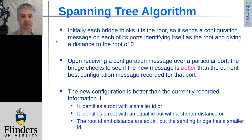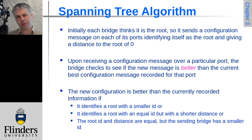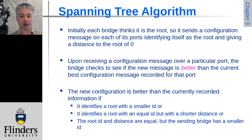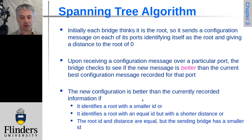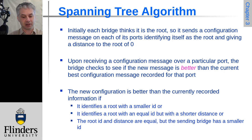In practice, each bridge needs to discover the other bridges, so it sends out a configuration message on each port saying 'I think I'm the root of the tree and my distance to the root is zero.' When it receives a configuration message from any other bridge, it checks whether that bridge should actually be the root instead. If the other bridge has a smaller ID, it stops claiming to be the root. If it sees a path to the root with a shorter distance, or the same distance but a lower bridge ID, it elects to use that instead.